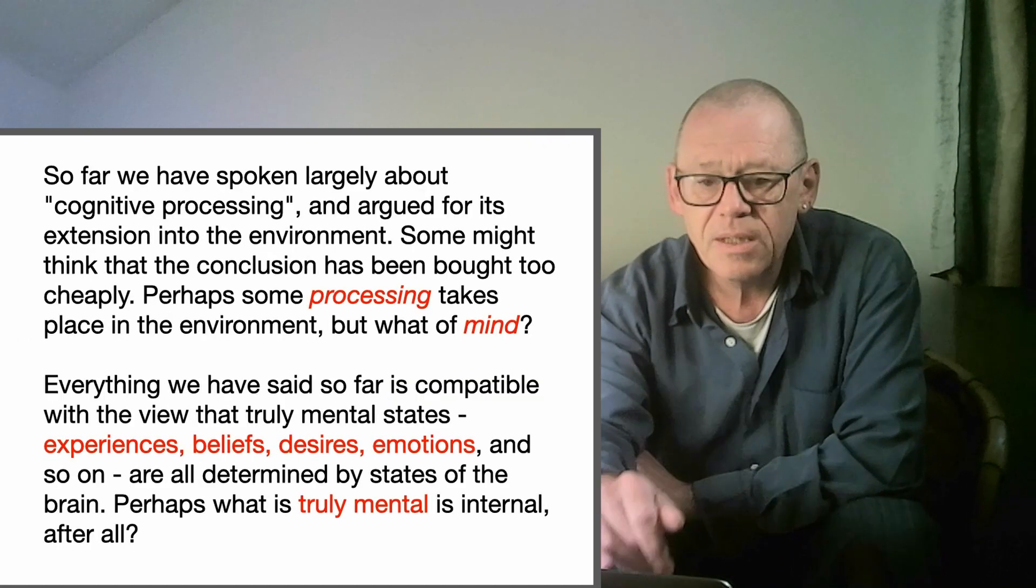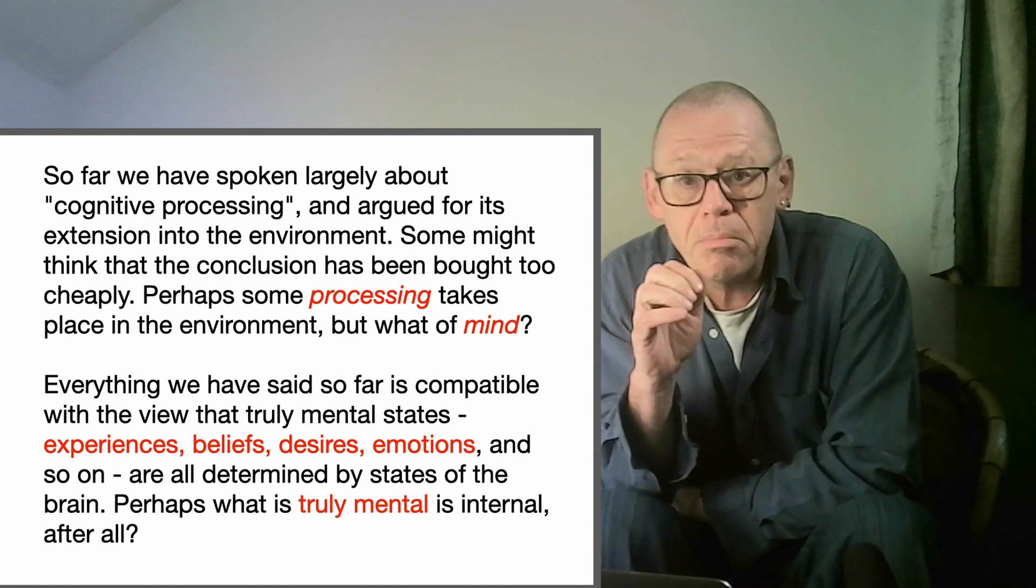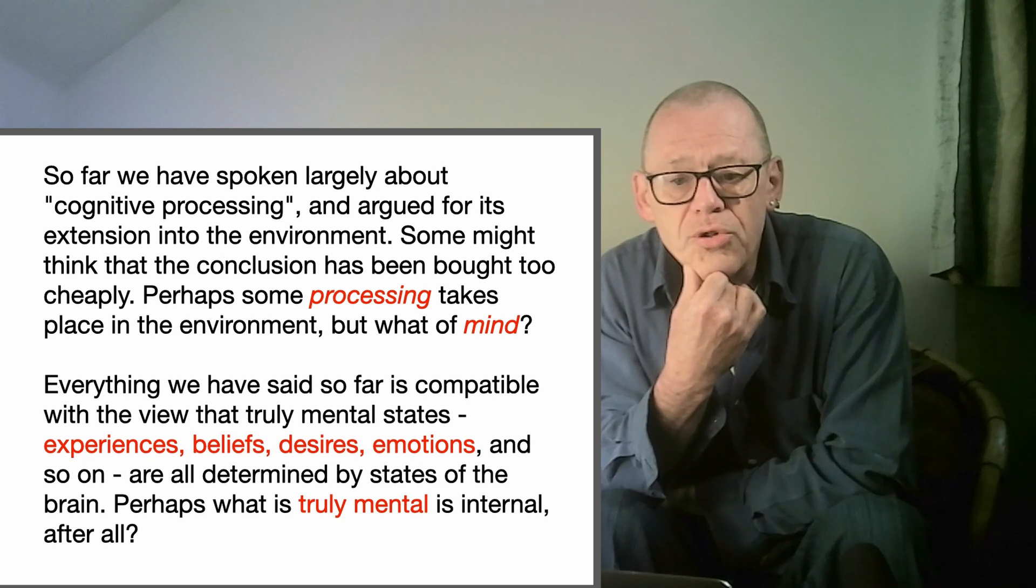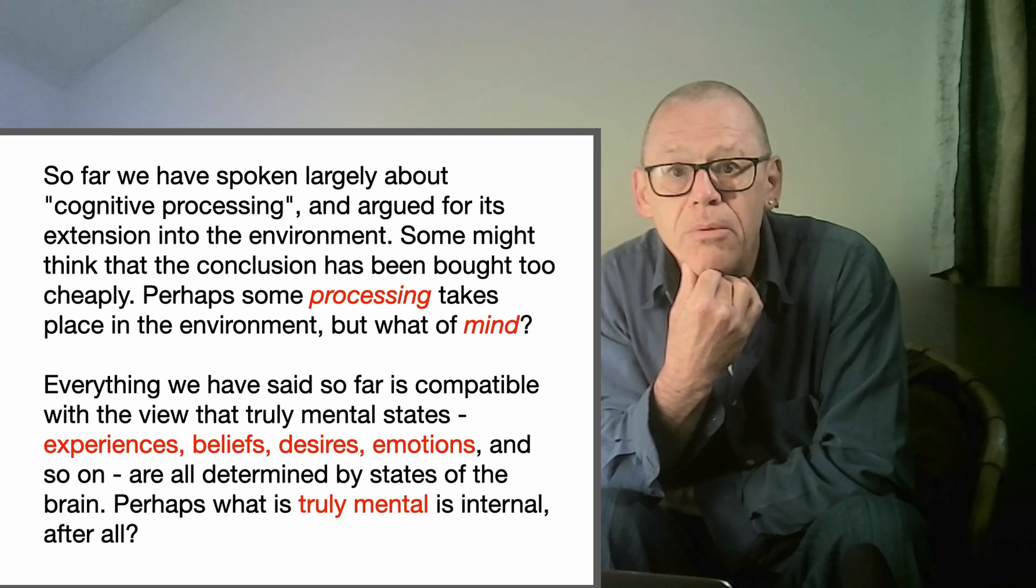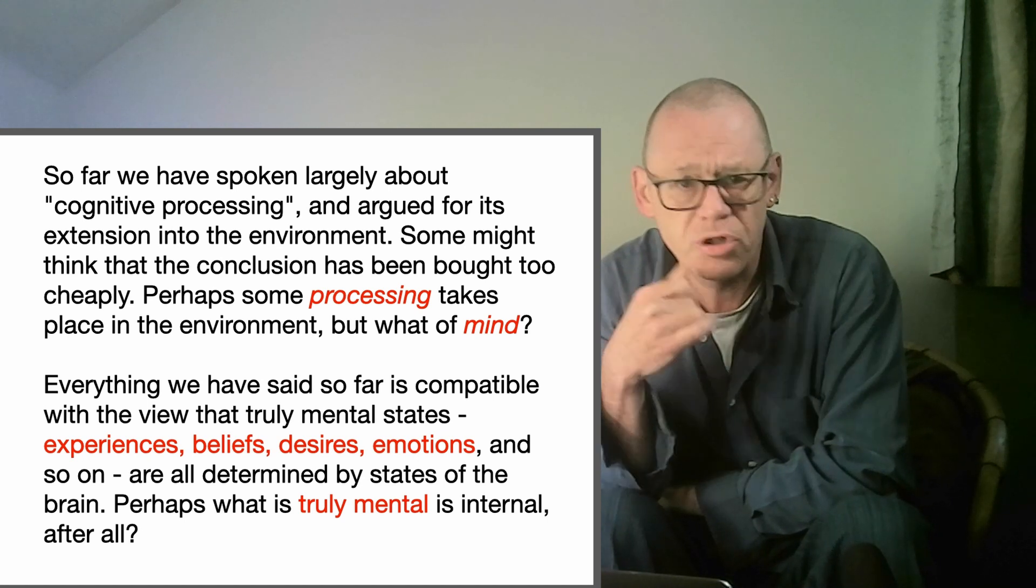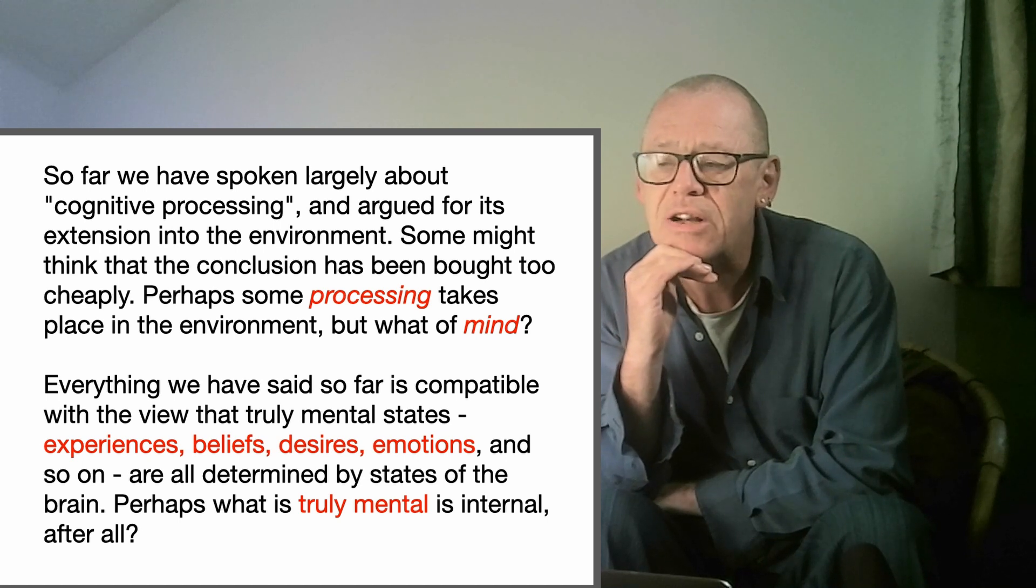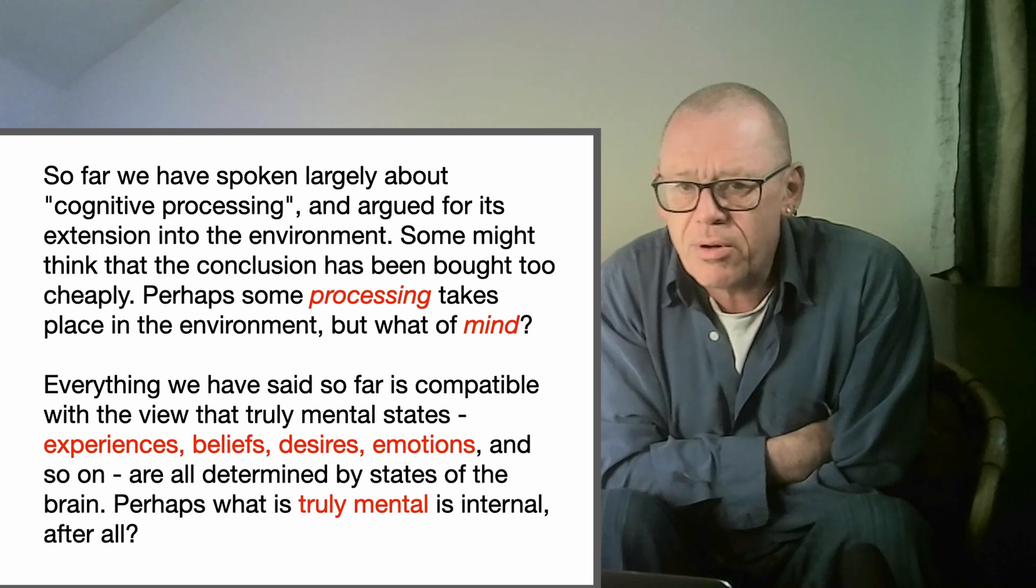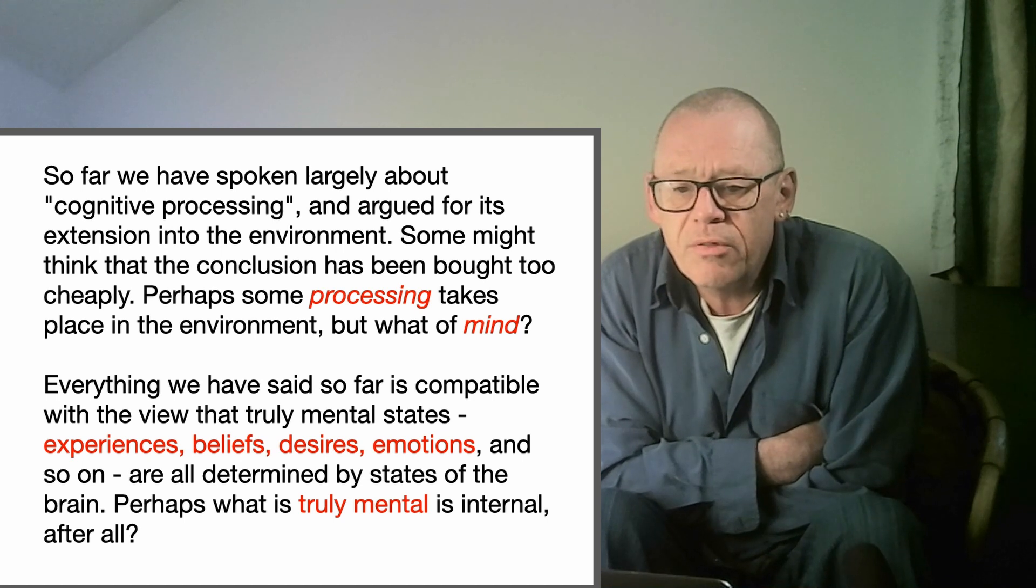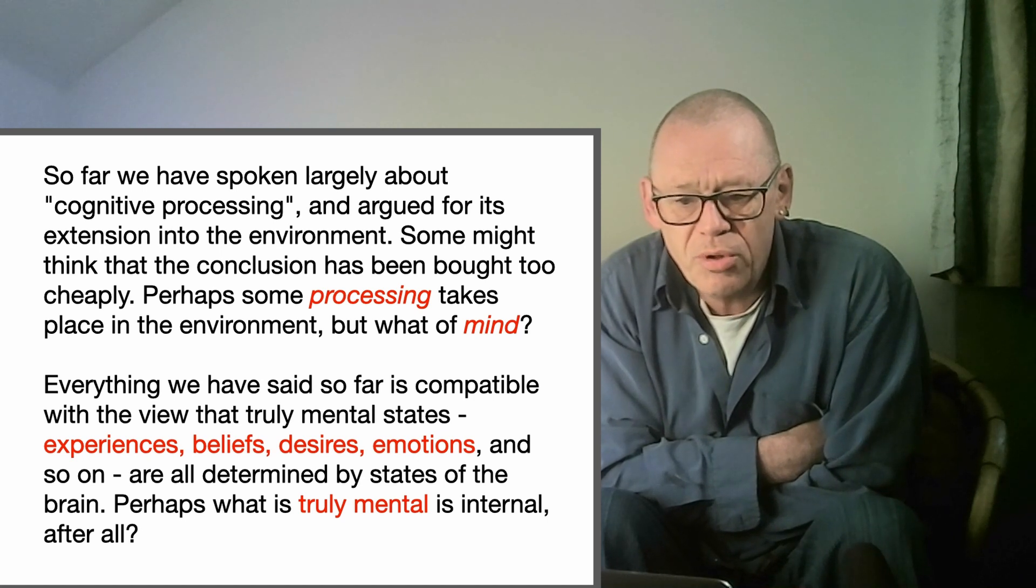They take the argument further in the paper. They say, so far we've talked mainly about cognitive processing, and we've noted that that term certainly doesn't explain itself, but makes certain kind of sense when you discuss specific kinds of examples. Some might think that the conclusion has been bought too cheaply. Perhaps some processing takes place in the environment. But what of mind? Notice that the very terms of this debate would not have made sense before 1960 or so. Those words just wouldn't have meant anything. But those who are strong favorites of a radically rationalist computational theory of mind place great faith on words like processing. And we've just noted the way that cognitive process works here. They then say that everything we have said so far is compatible with the view that truly mental states such as experiences, beliefs, desires and emotion are all determined by states of the brain. Perhaps what is truly mental is internal after all.